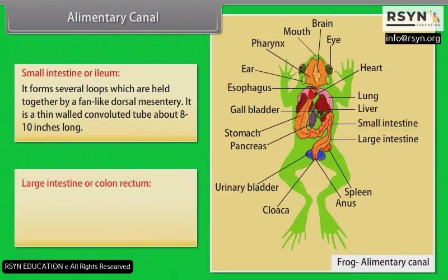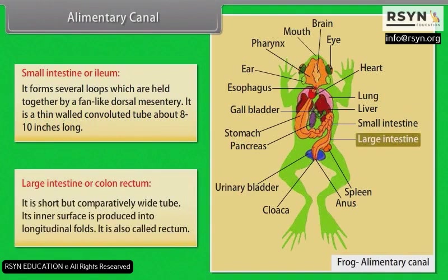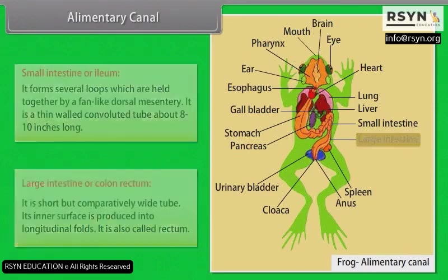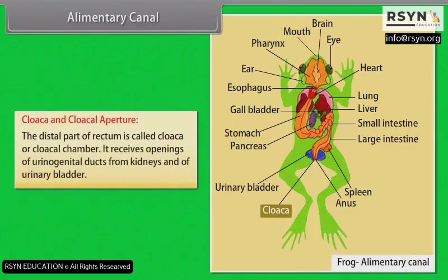The large intestine or colon is a short but comparatively wide tube; its inner surface is produced into longitudinal folds. The distal part of the rectum is called the cloaca or cloacal chamber. It receives openings of the urinogenital ducts from the kidneys and of the urinary bladder.